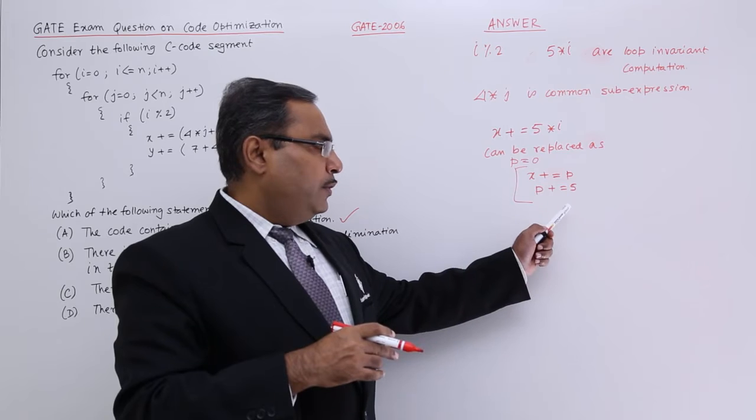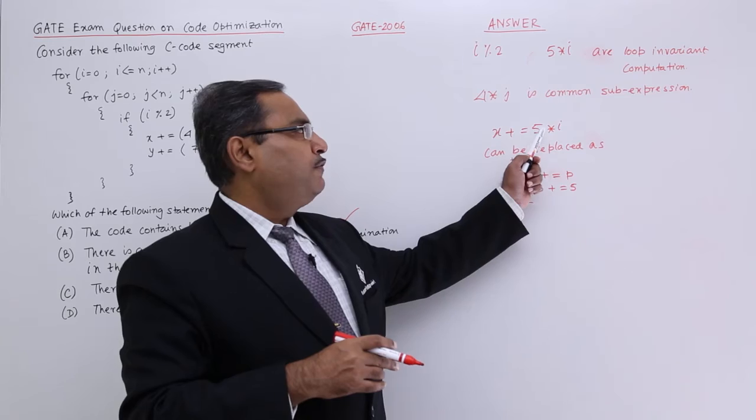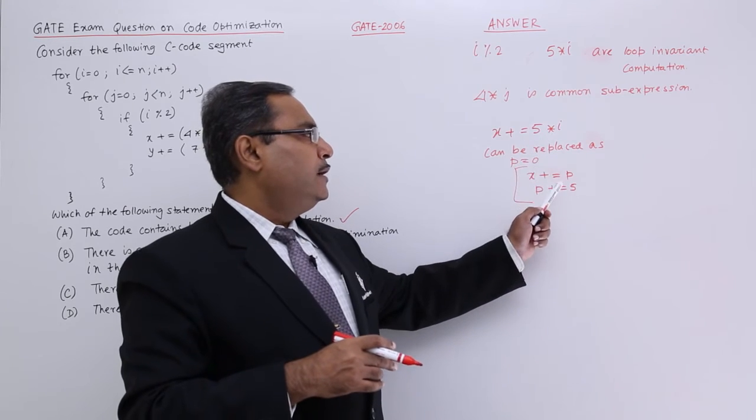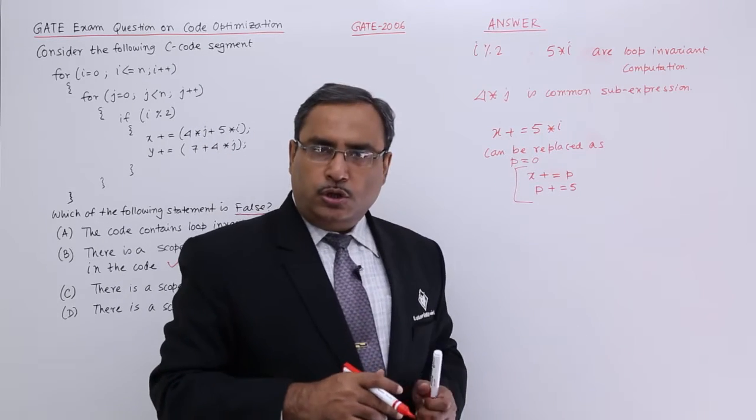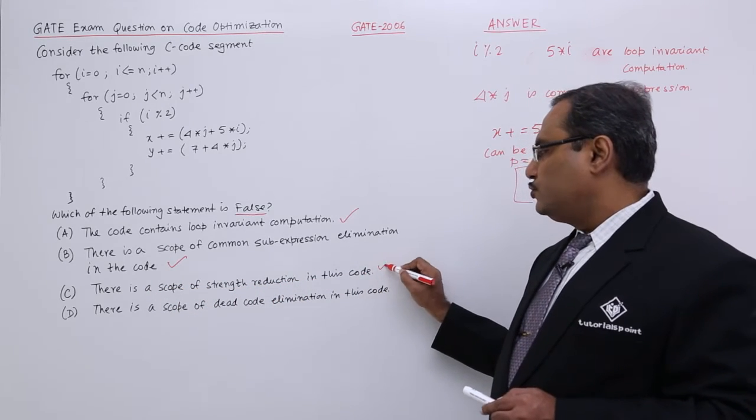In this way we are replacing this 5 star i, x plus equal to 5 star i, you are replacing this star by this addition operation. As a result of that there is a scope of strength reduction in the code is also true.